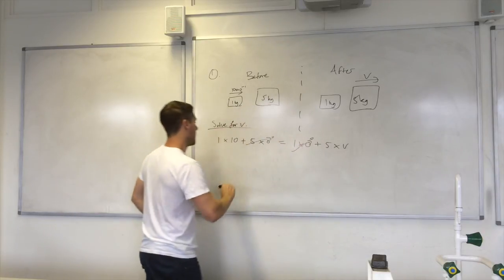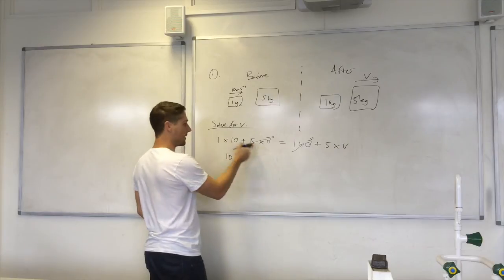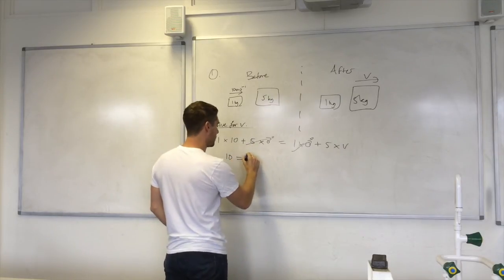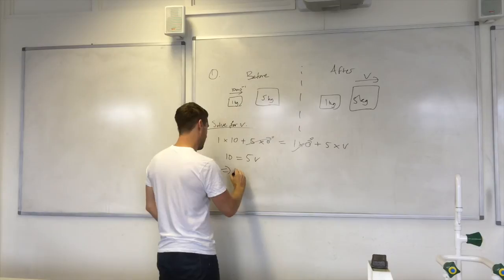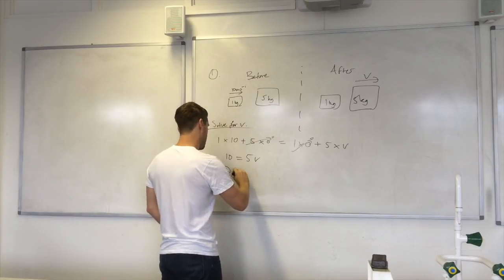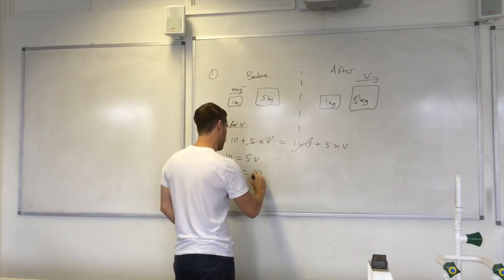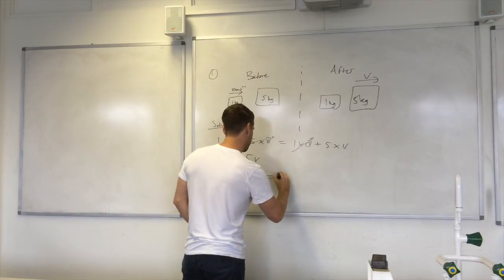Now we can see immediately that term, that term they're going to drop out because they're both equal to zero. So now we have one times ten is ten is equal to five v.